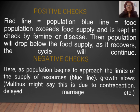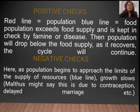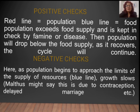Regarding positive checks: the red line represents population and the blue line represents food supply. When population exceeds food supply, it is kept in check by famine or disease, causing the population to drop below the food supply level. As it recovers, the cycle continues. This positive check operates automatically as situations change over time.